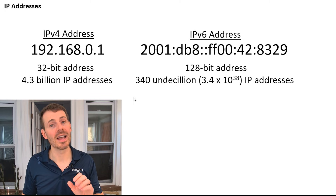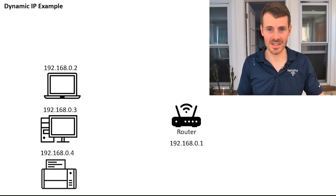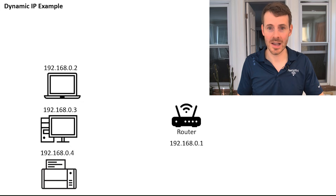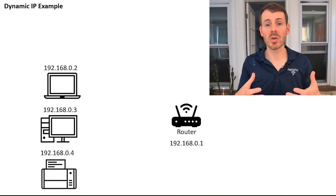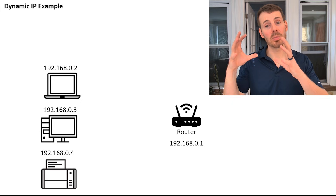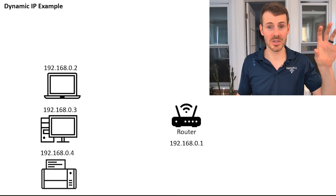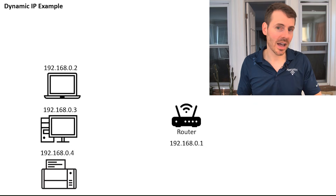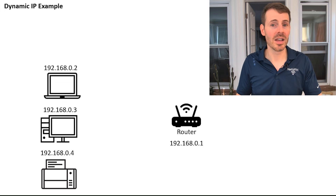Now let's talk about how your devices get IP addresses. There are two different ways. The first is with a dynamic IP address — this is what usually happens in most people's home networks. When a device joins the home network, your router has a pool of available IP addresses and will automatically assign your device an IP address from that pool. These are dynamic IP addresses, which means devices don't get the same IP address every time.